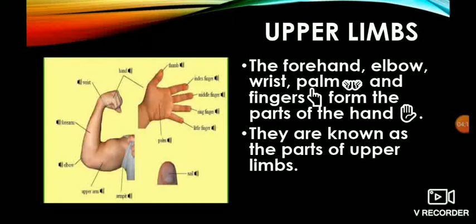Now we will study about upper limbs. The forearm, elbow, wrist, palm and fingers form the parts of the hand. Upper limbs means hand. They are known as the parts of upper limbs.